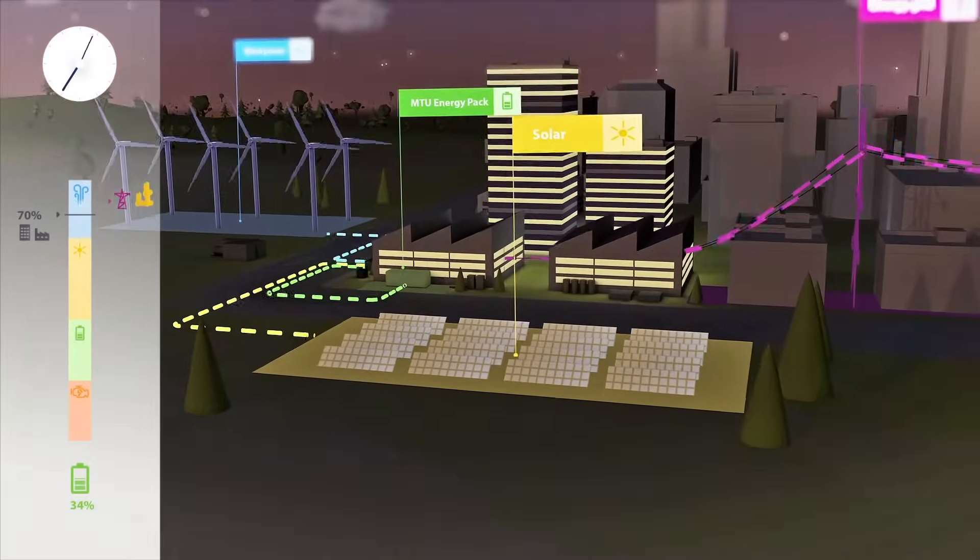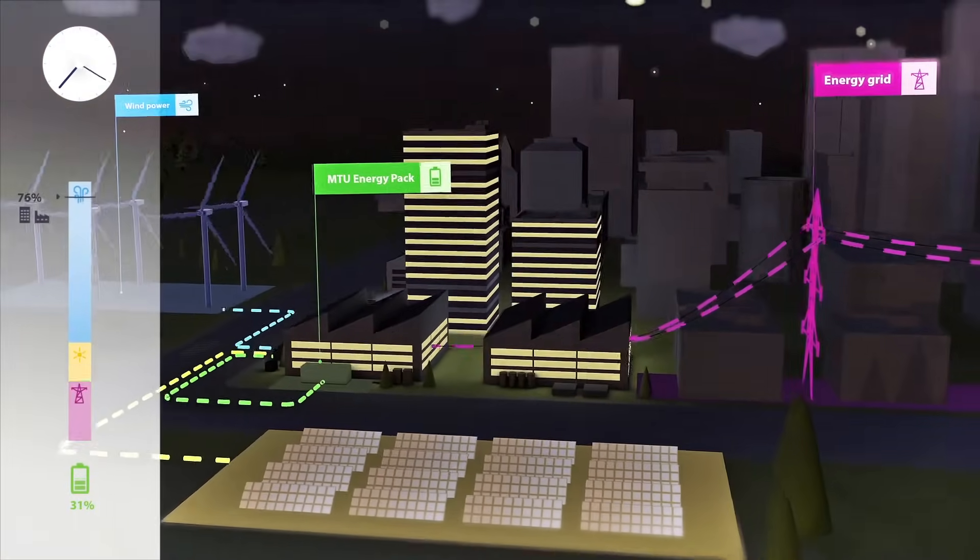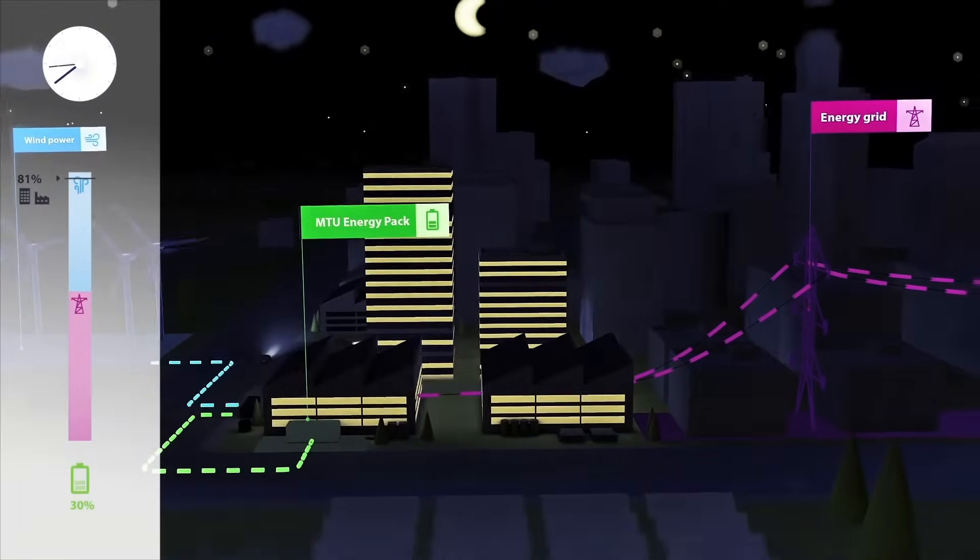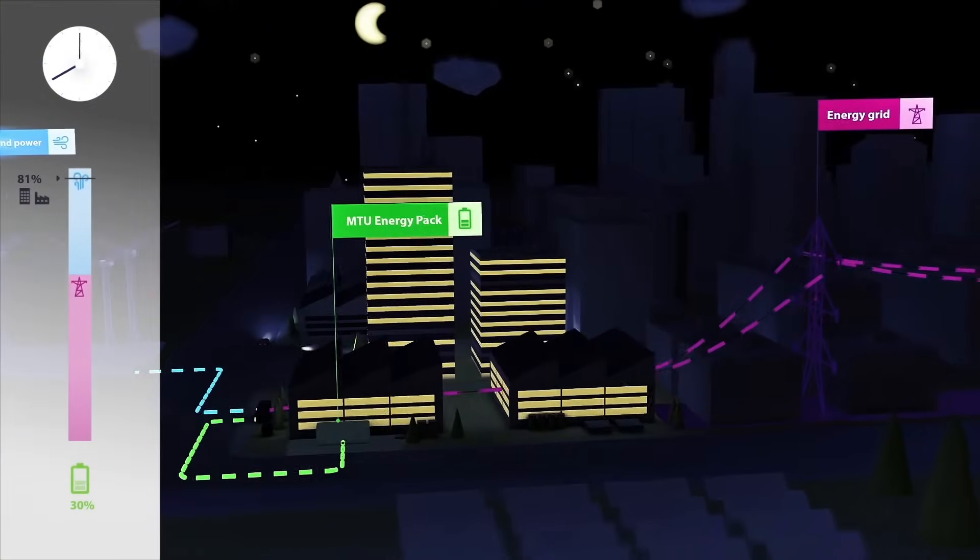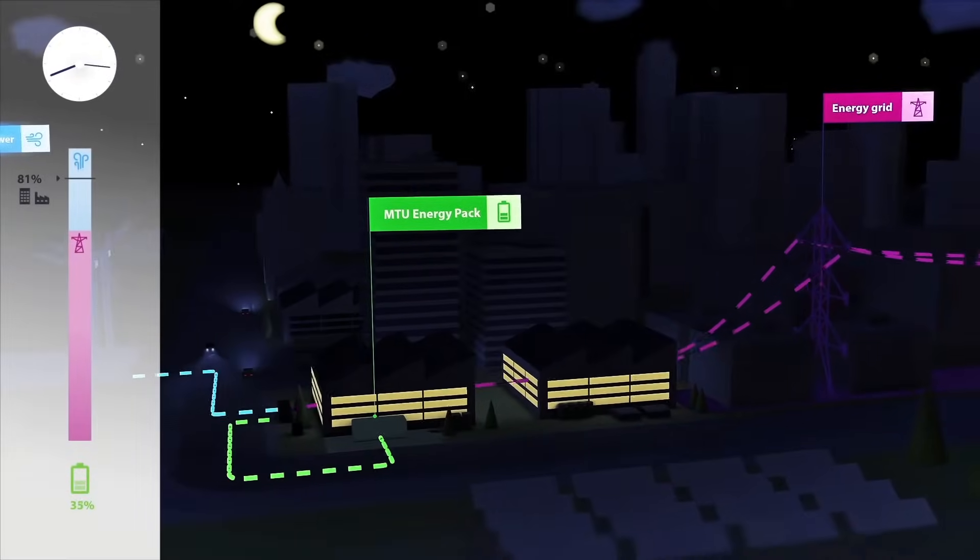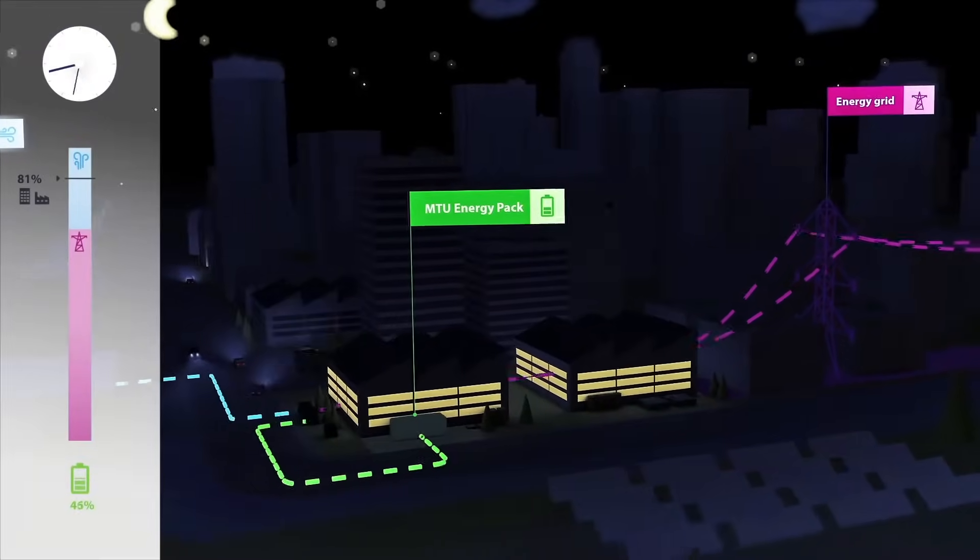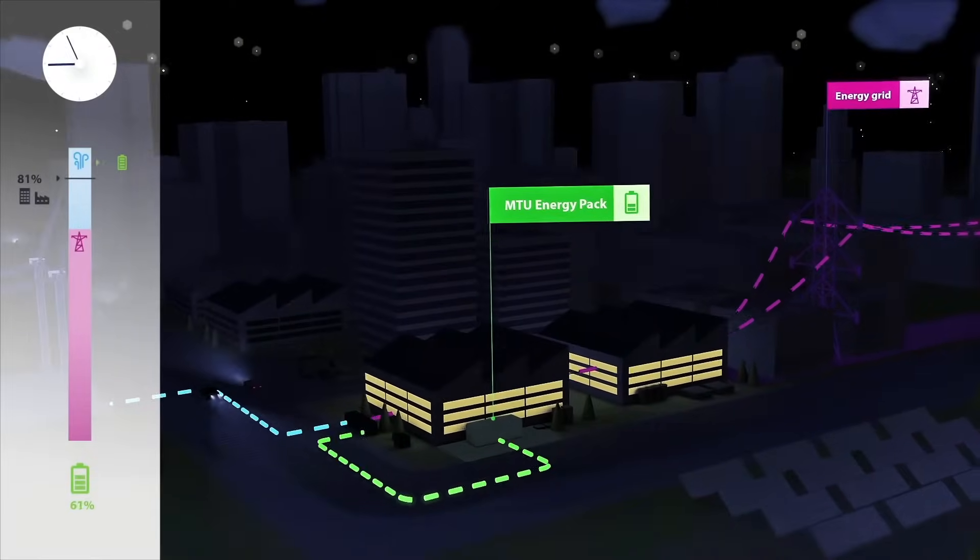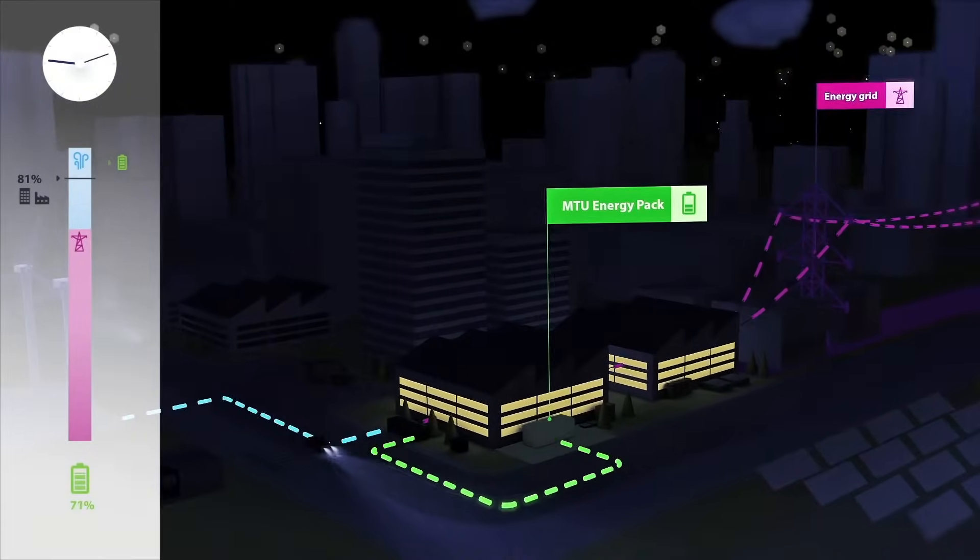When the late shift begins in the factory, the grid regularly reports an underload, the next financial opportunity. For now, our system draws inexpensive power from the grid to supply the production facilities in the factory while also recharging its battery with the energy generated in parallel from renewable sources.